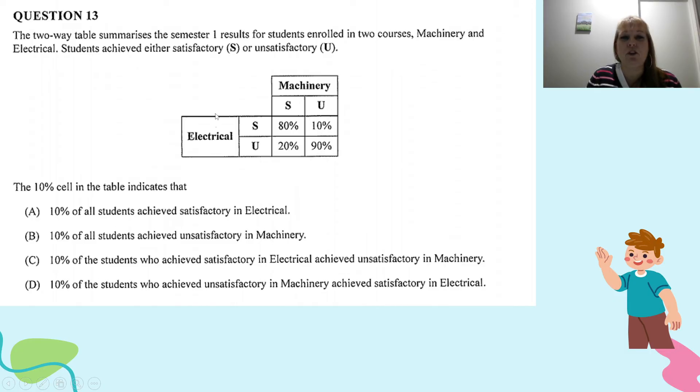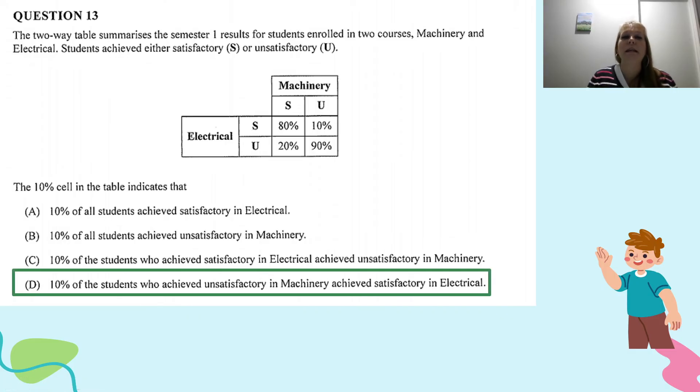So let's look here and see if D is true, because we're reading this one the wrong way. D, 10% of the students who got unsatisfactory in Machinery? Yes. Achieve satisfactory in Electrical? Yes. That's how we read the two-way table. So the only possible option is D.